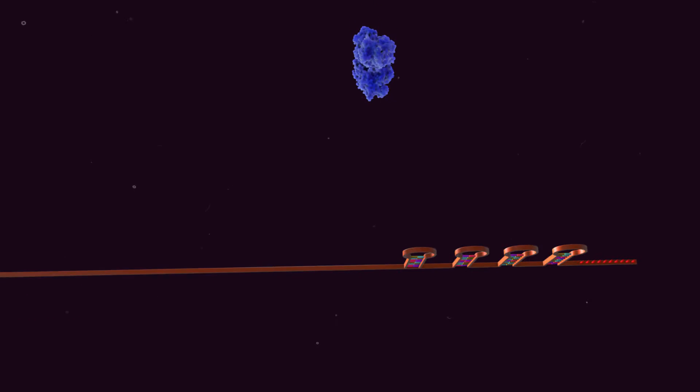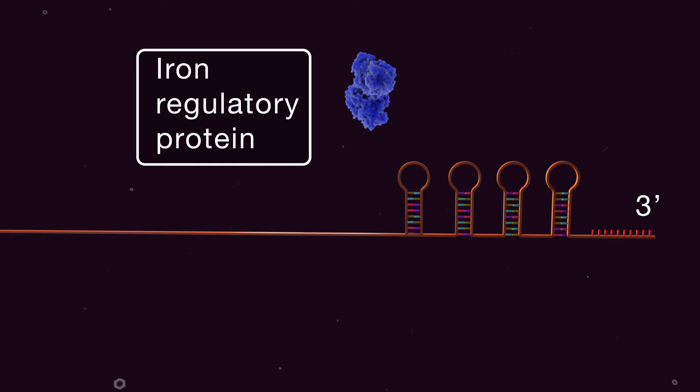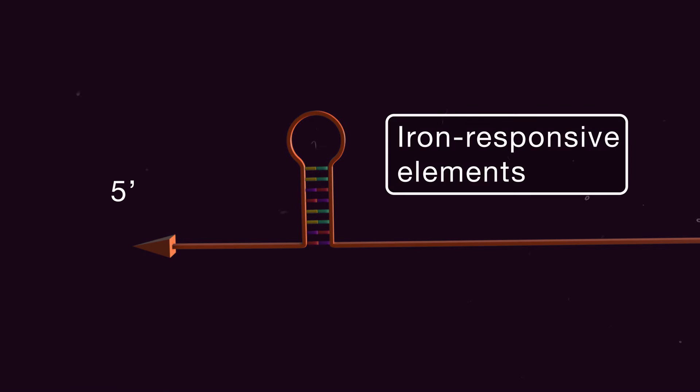The translation of these proteins is regulated post-transcriptionally by the binding of iron regulatory proteins to three-dimensional stem-loop structures located in the 3' or 5' untranslated region of the messenger RNA of these proteins. The stem-loop structures are called iron-responsive elements.